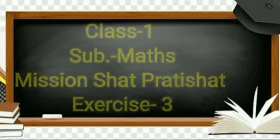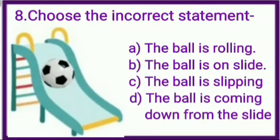So let's start. Students, sum number 8. Choose the incorrect statement. See kids, in this picture, we have a slide and a ball on this slide. Dear kids, we know the round objects roll and other do not.